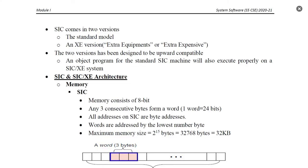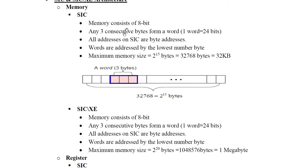We are going to discuss about memory, registers, instruction format, addressing mode, instruction set, input and output, etc. The maximum memory size of the SIC machine is 2 raised to 15 bytes, that is equal to 32 KB. The maximum memory size of the SIC-XE machine is 2 raised to 20 bytes, that is equal to 1 MB. One memory byte is equal to 8 bits, and one word is equal to 24 bits.